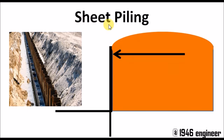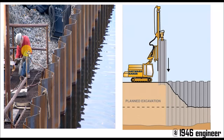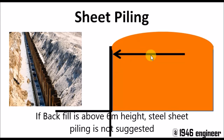The sheet piling can be driven using machines, and this is how water is prevented from entering into the construction site. Sheet piling can be temporary or it can be permanent. These sheet piles resist horizontal load to an extent.